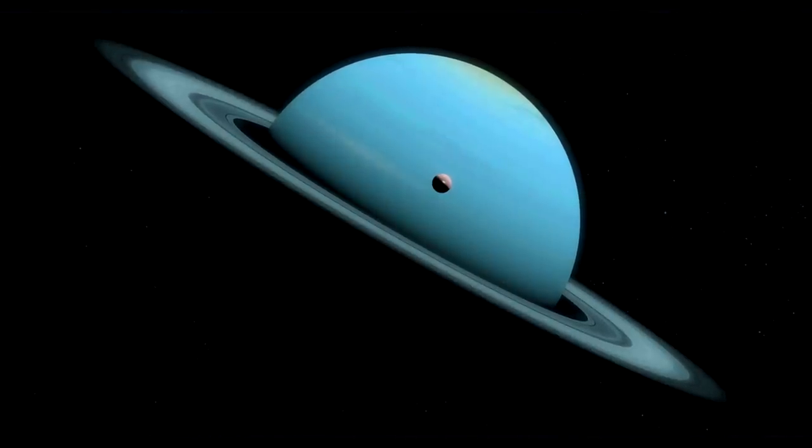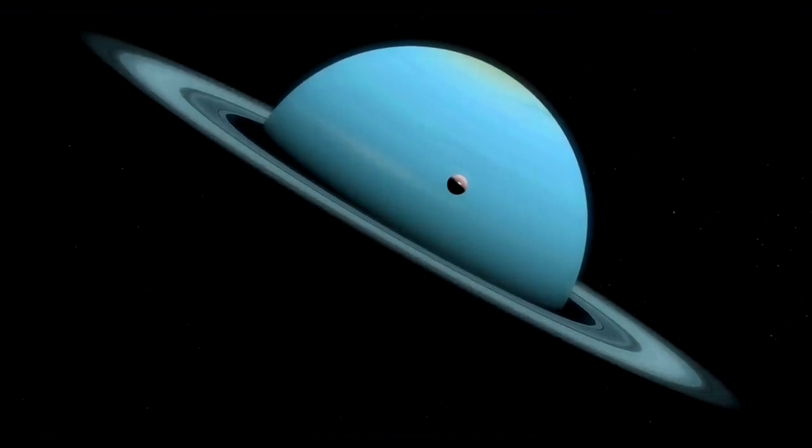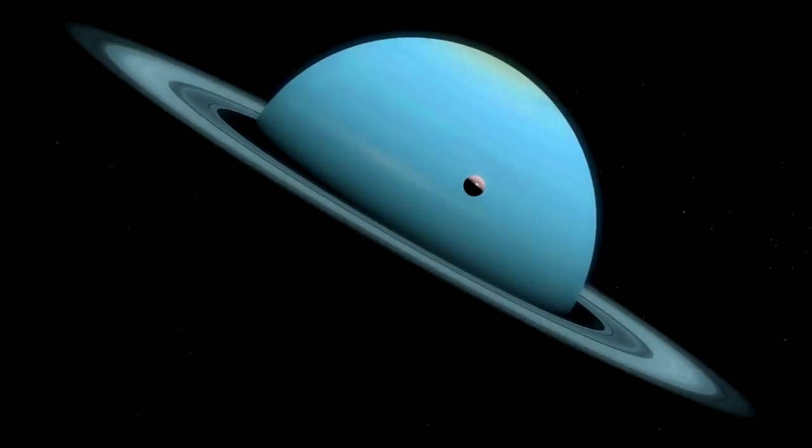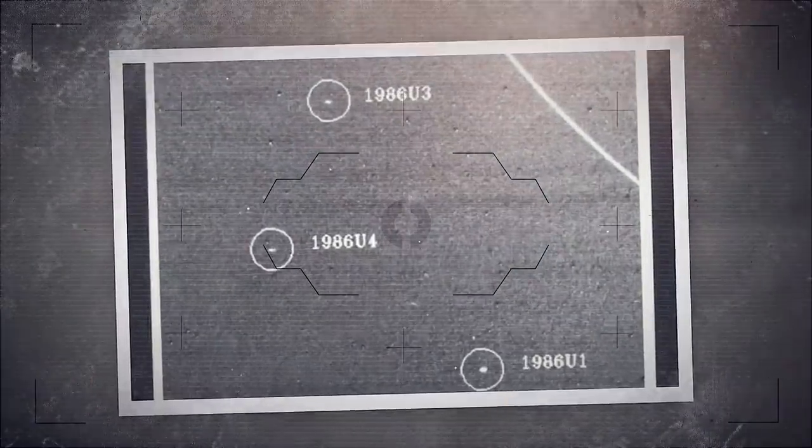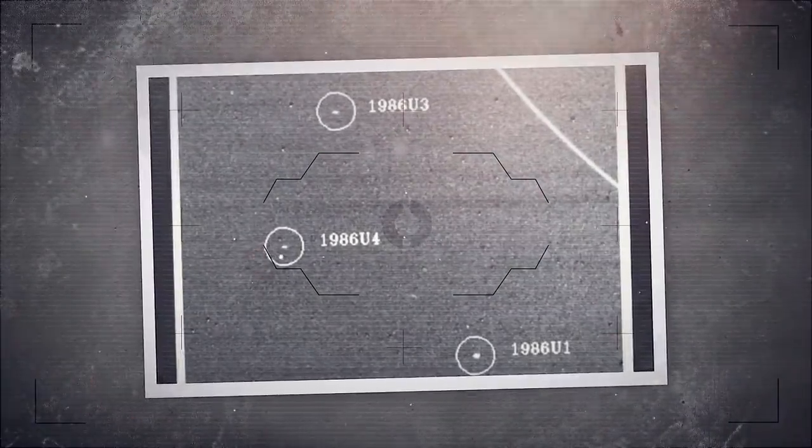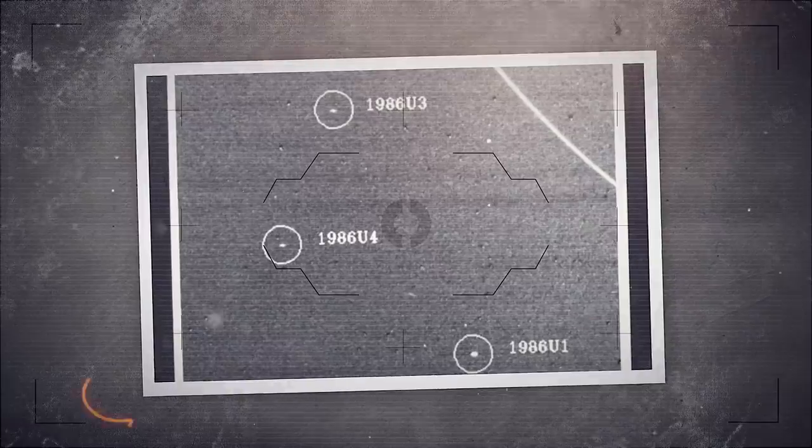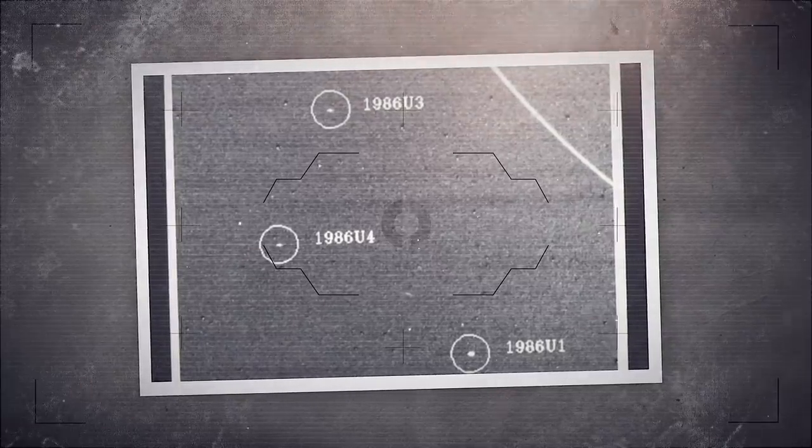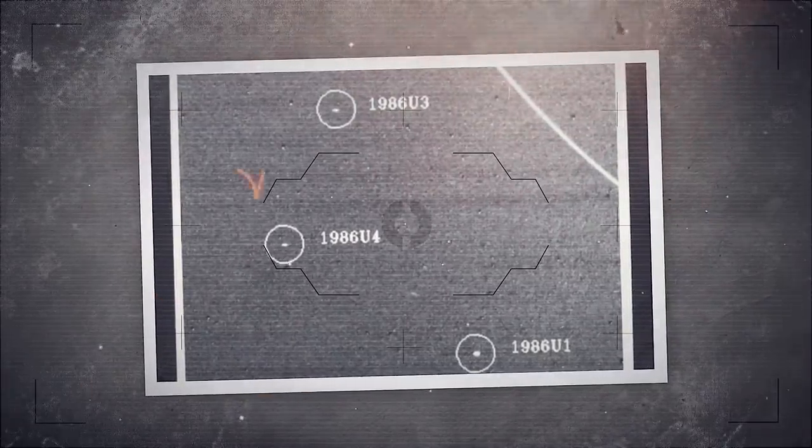On Uranus, we saw its outermost ring, its moon Miranda, cloud movement in time-lapse. The most remarkable discoveries of note were the three new moons discovered, yet to be named. They are for now called 1986 U1, 1986 U3, 1986 U4. A tenth new ring was discovered, named 1986 U1R.